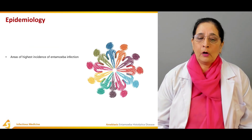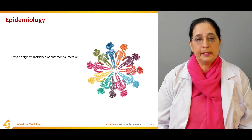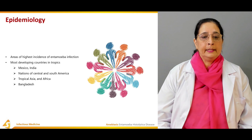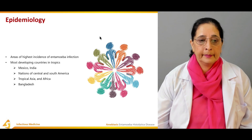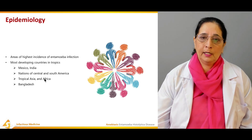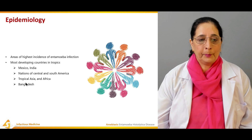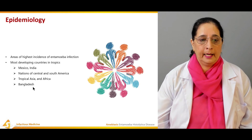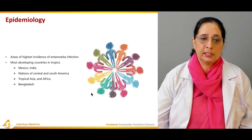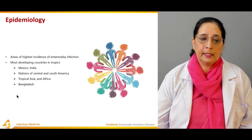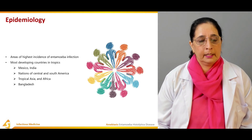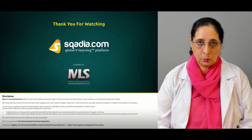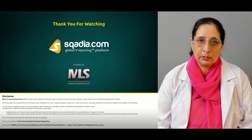The areas of highest incidence of Entamoeba infection are in tropical regions, including Mexico, India, nations of Central and South America, tropical Asia, Africa, and Bangladesh. These tropical countries are most commonly affected by Entamoeba infection and amoebiasis. That concludes Section 1 of this lecture.